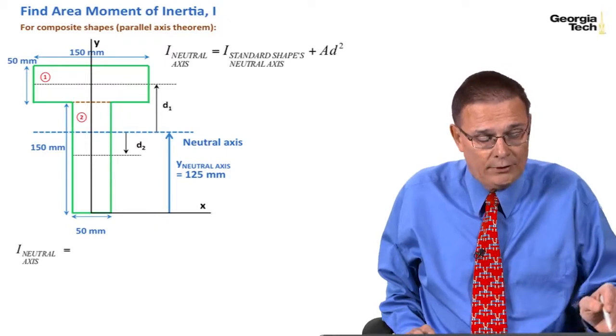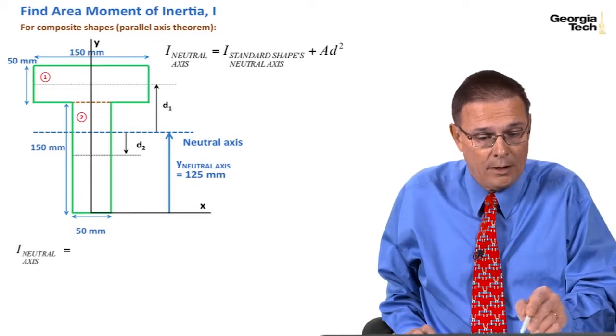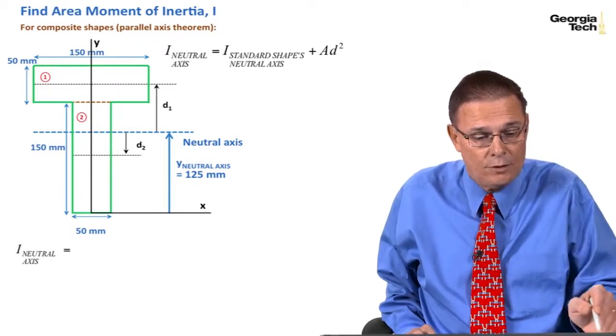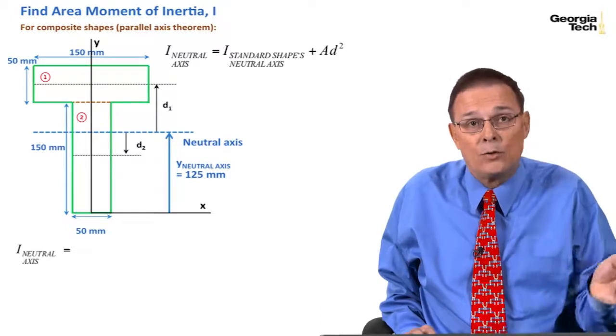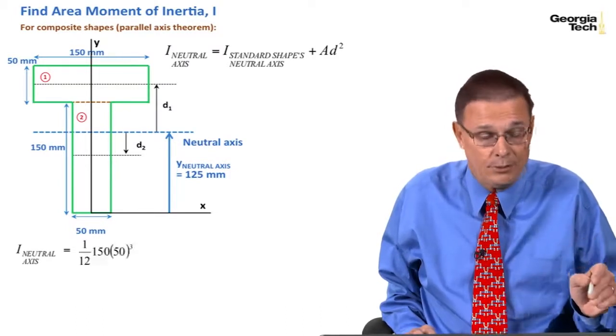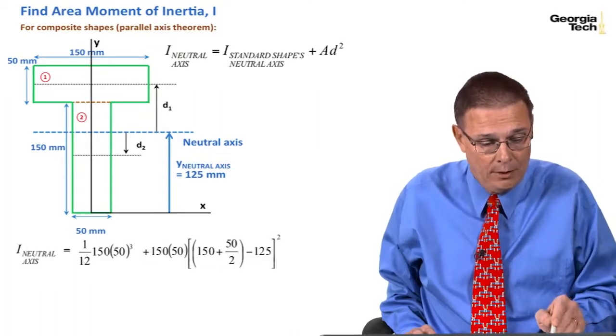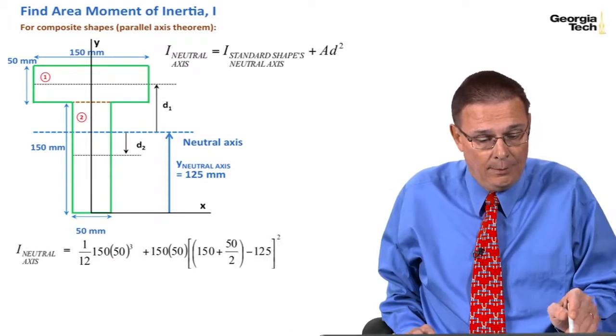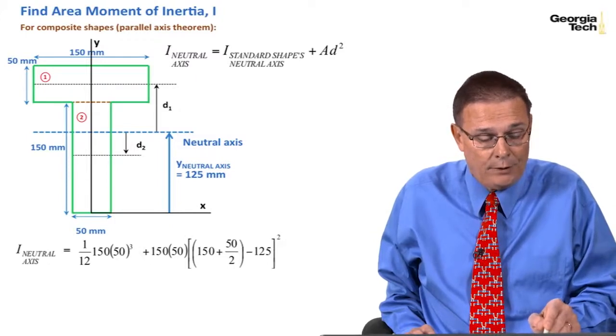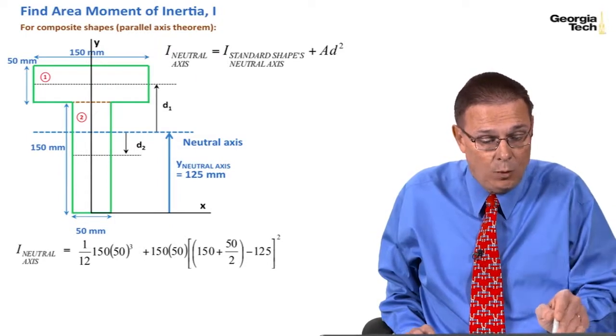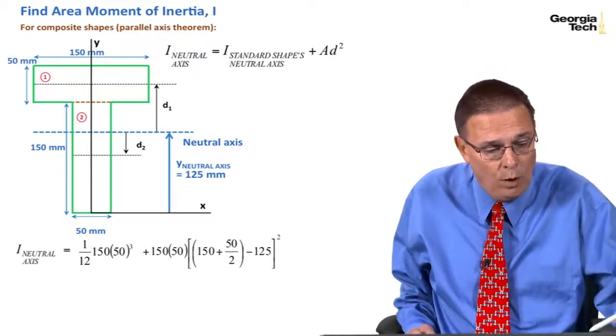And so I've got I neutral axis is the standard shape one's I about its neutral axis, which is 1/12 base times height cubed, which is 1/12, 150 times 50 cubed, plus the area, 150 times 50 times d1 squared.